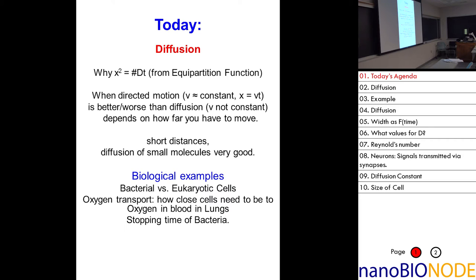If x is much less than one — very small in some units — then for directed motion x equals velocity times t, so t is very small. And here for diffusion, x-squared equals 2Dt, so if x is very small, then x-squared is much less than one, and therefore t is very small as well.